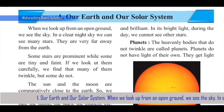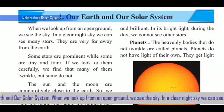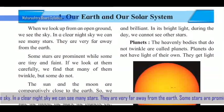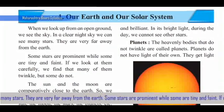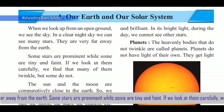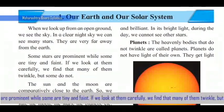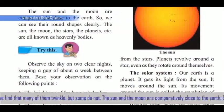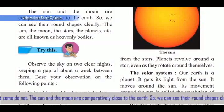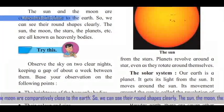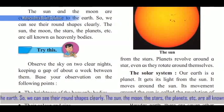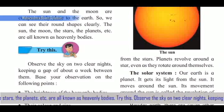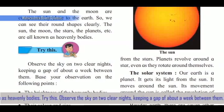Our Earth and our solar system. When we look up from open ground, we see the sky. On a clear night, we can see many stars — they are very far away from the Earth. Some stars are prominent while some are tiny and faint. Many of them twinkle, but some do not. The Sun and the Moon are comparatively close to the Earth, so we can see their round shapes clearly. The Sun, the Moon, the stars, the planets, etc. are all known as heavenly bodies.